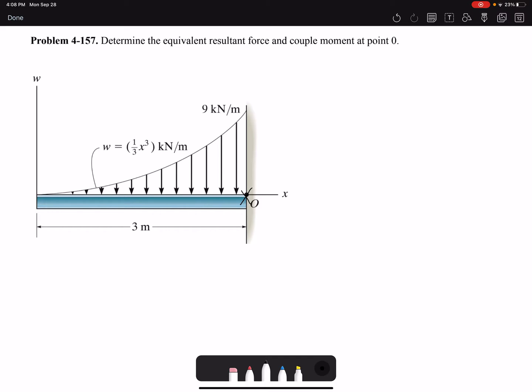First we have to find the resultant force for this distributed loading. We need to find FR. For a distributed loading, FR is simply the area under the curve: the integral of w dx from 0 to 3. Here our w, the intensity, is x³/3 dx from 0 to 3.